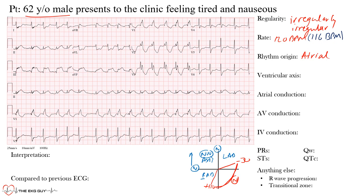To find the axis, we pay attention to lead I sitting at zero degrees and lead aVF at positive 90 degrees. Now let's look at lead I: above and below the baseline are quite similar — maybe even slightly more negative — so it lies somewhere in between the positive and negative poles.